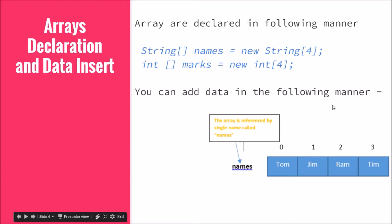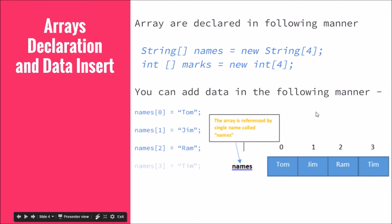How do you add data in arrays? You say the array name, give the index where you want to store, and give the value. Remember, index always starts with 0, so 0, 1, 2, and 3. If you want to store at the zeroth element, you say 'names[0] = Tom', similarly 'names[1] = Jim', and so on.